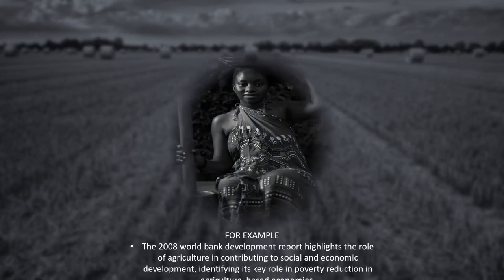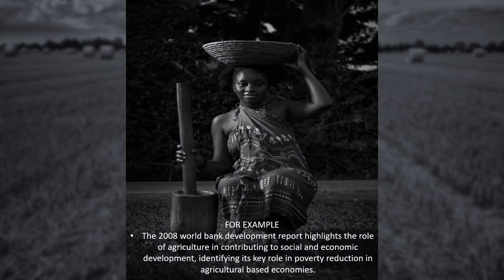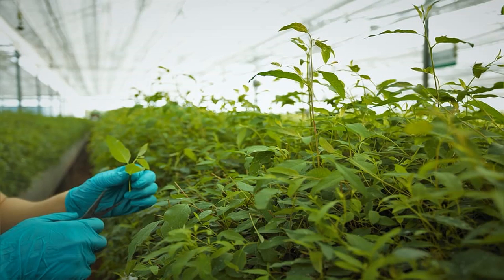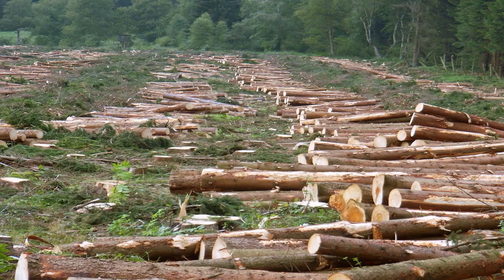The World Bank Report 2008 highlighted the role of agriculture in social and economic development, identifying its key role in poverty reduction in agriculture-based economies. The International Assessment of Agricultural Science and Technology published in 2008 reflected the importance of agricultural science and technology. The Millennium Ecosystem Assessment and Global Biodiversity Outlook all noted that agriculture is the largest driver of biodiversity loss through land use, seeds, water, and nutrient use, and that decline in most ecosystem services risks undermining agricultural productivity.